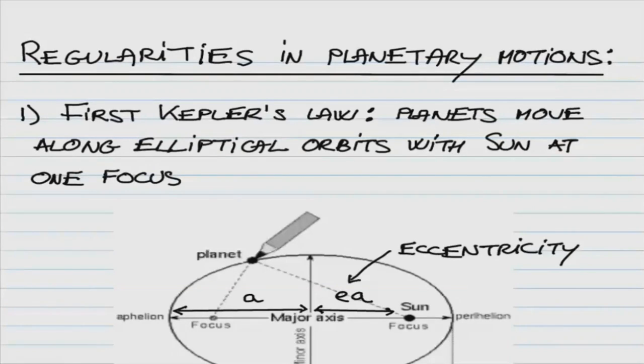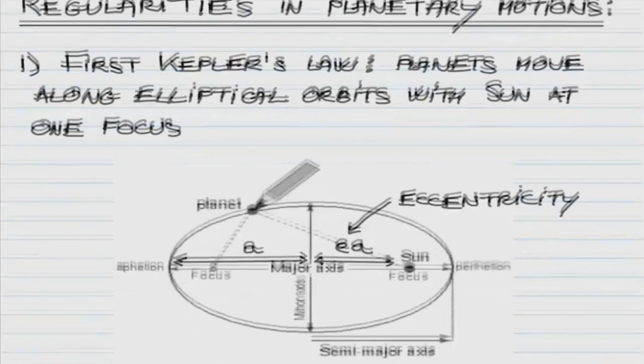The first law describes the shape of a planet's orbit. It's elliptical. An ellipse is a deformed circle, but it's actually quite a precisely defined curve as illustrated here.